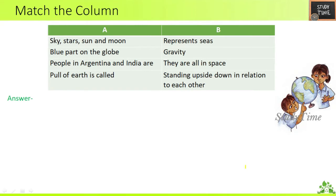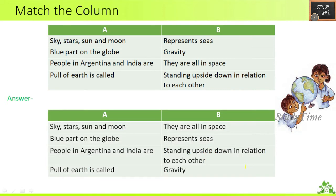That's a short intro about the chapter. Now we'll see the worksheet. Match the column: Column A and Column B are given. Sky, stars, sun, and moon are all in space. The blue part on the globe represents seas. People in Argentina and India are standing upside down in relation to each other. The pull of the earth is called gravity. Since there is no gravity in space, everything is not falling down.